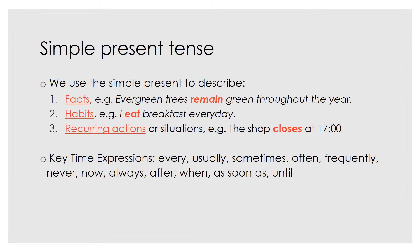Simple present tense. We use the simple present to describe facts, habits, and recurring actions or situations. For example — facts: evergreen trees remain green throughout the year. Habits: I eat breakfast every day. Recurring actions: the shop closes at 5pm. Key time expressions for simple present tense include every, usually, sometimes, often, frequently, never, now, always, after, when, as soon as, and until, to name a few.